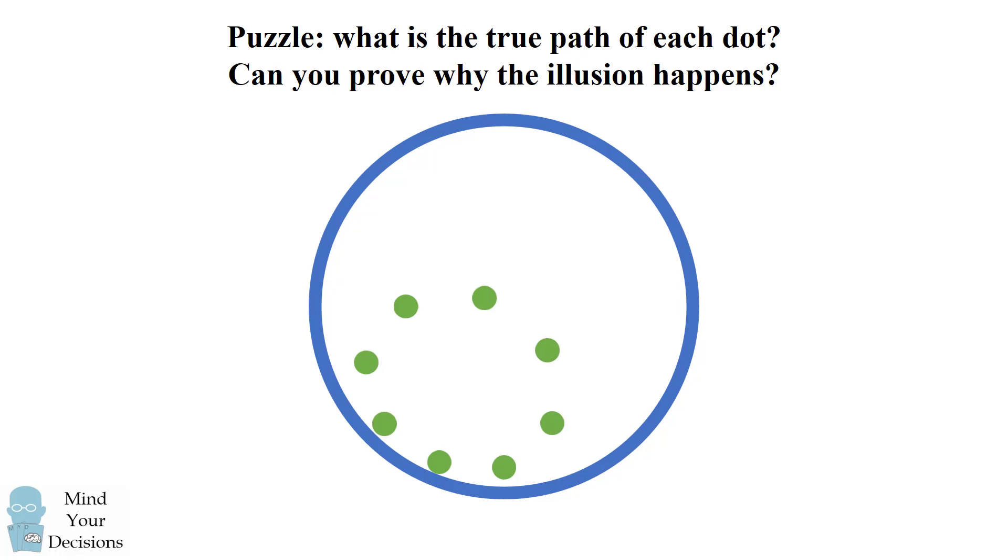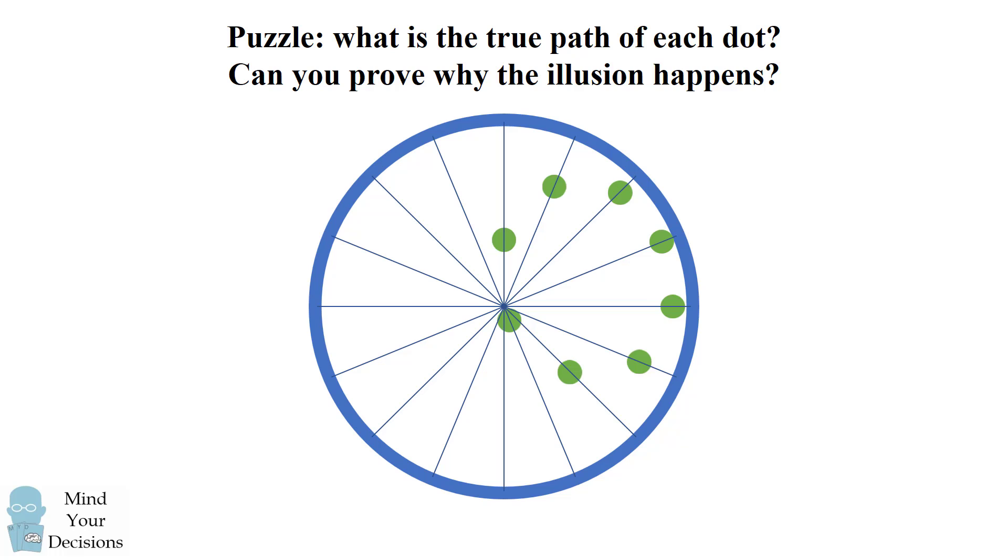So part one of the puzzle is that the true path of each dot is a straight line. If you follow any particular green dot, you'll see it's following exactly a straight line segment and going back and forth.